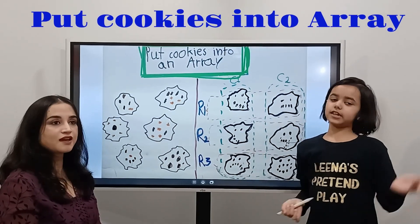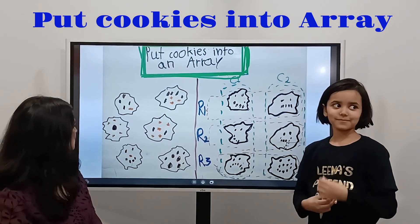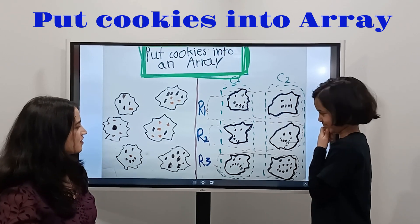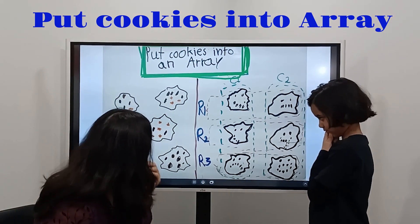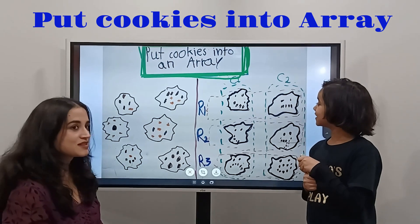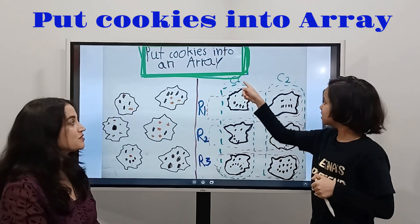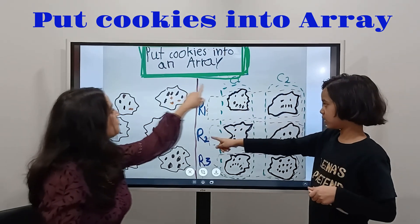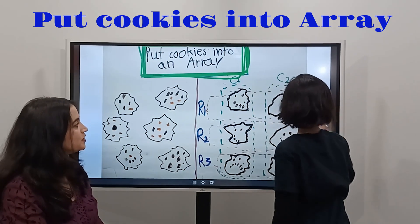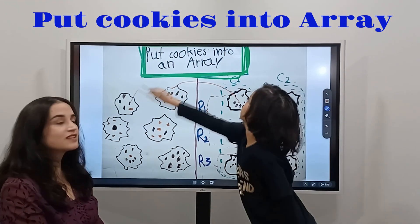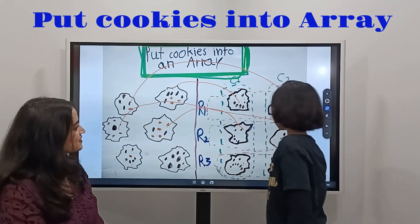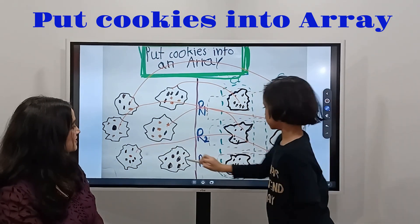Put cookies into an array. How can we do that? They're scattered. Can you show us, Lina? So as you can already see, they already cut it. C1, C2, R1, R2, R3. Pretend we can move the cookie here — this one goes here, this one goes here, this one goes here, this one goes here, this one goes here, this one goes here, this one goes here.